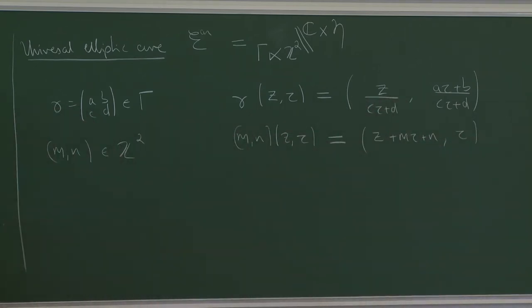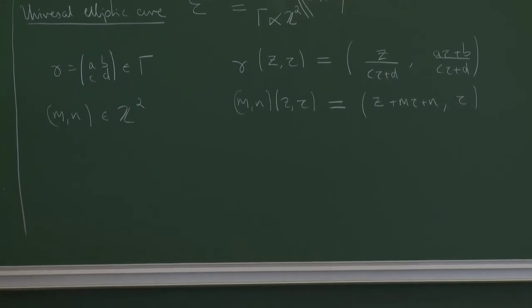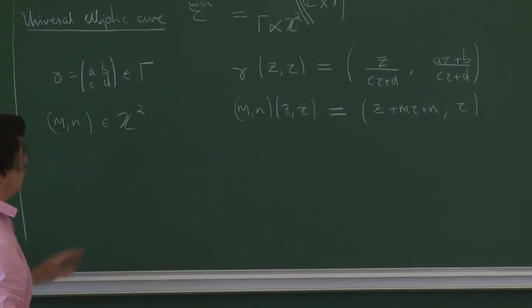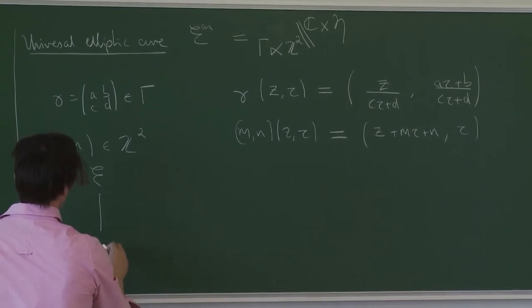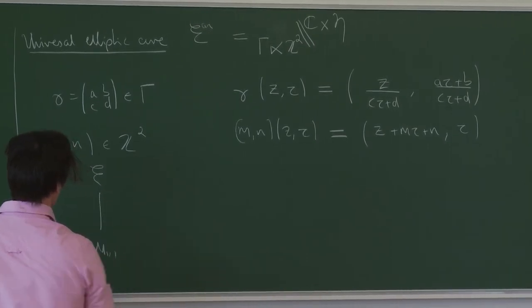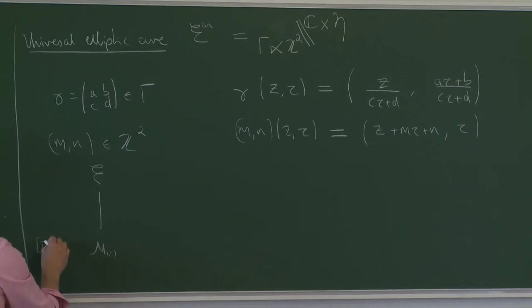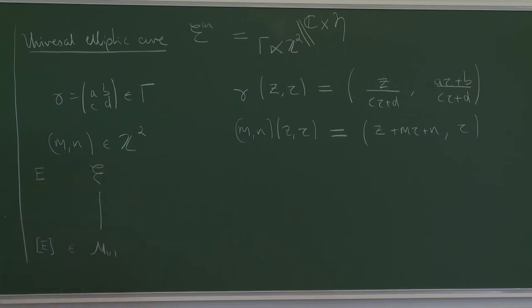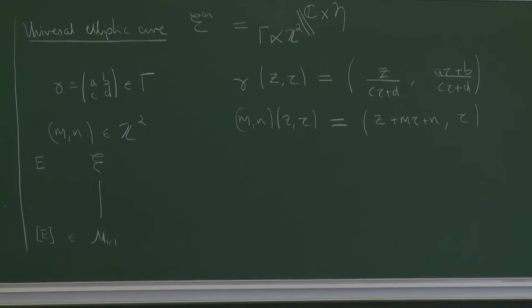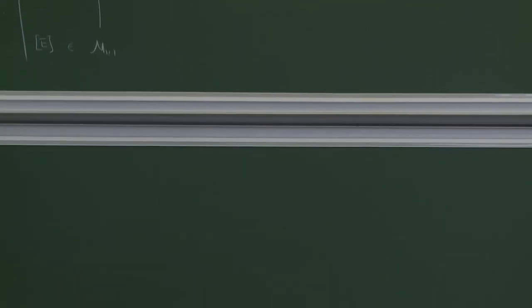That defines the universal elliptic curve over C. Concretely a point in M1n is an isomorphism class of elliptic curves E, and the fibre over that point is the elliptic curve itself. So that's one way to think about M11 which is very classical.